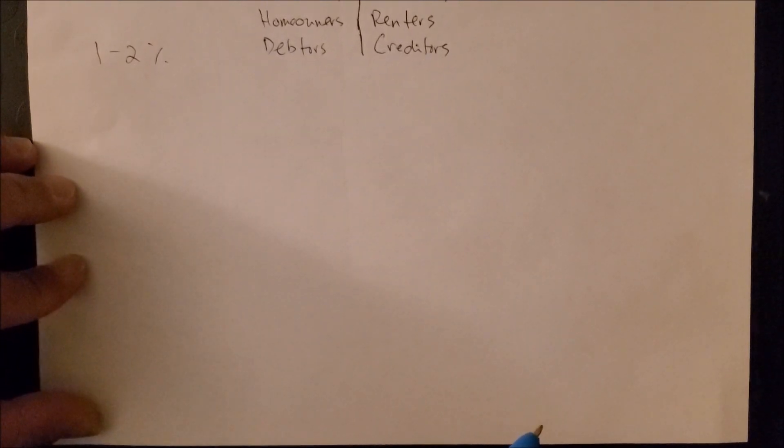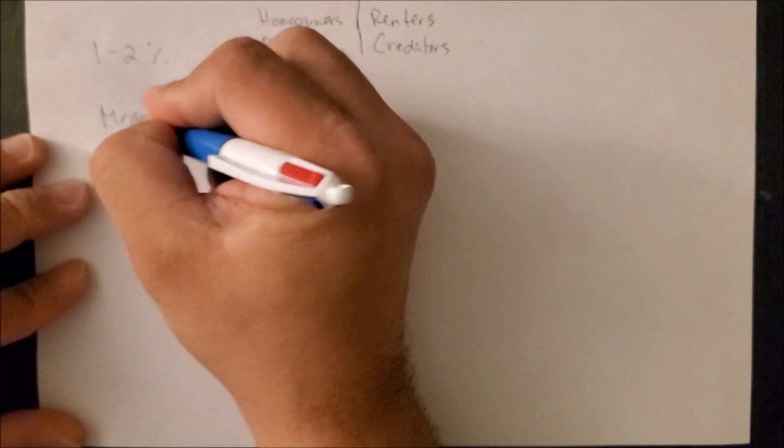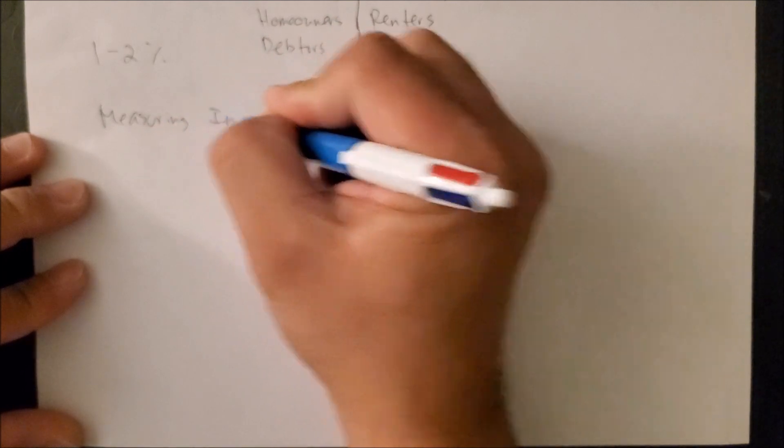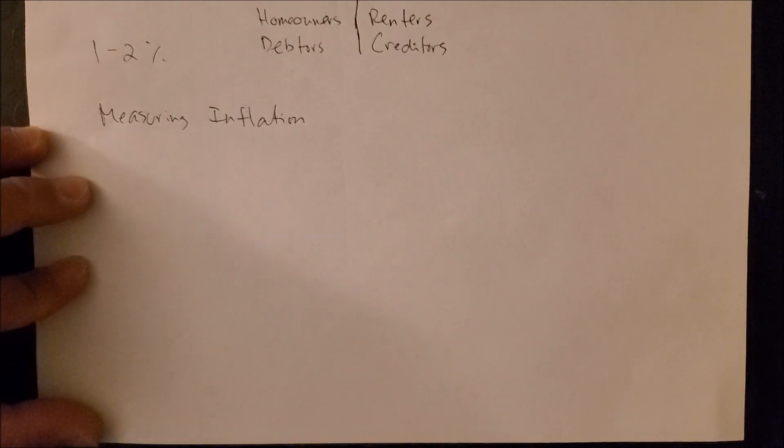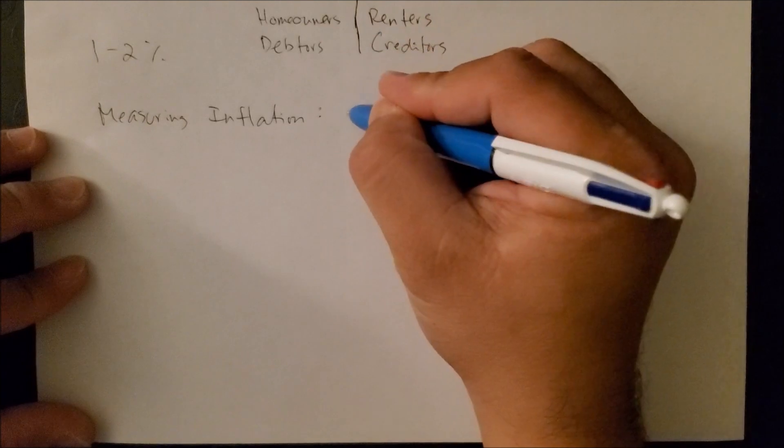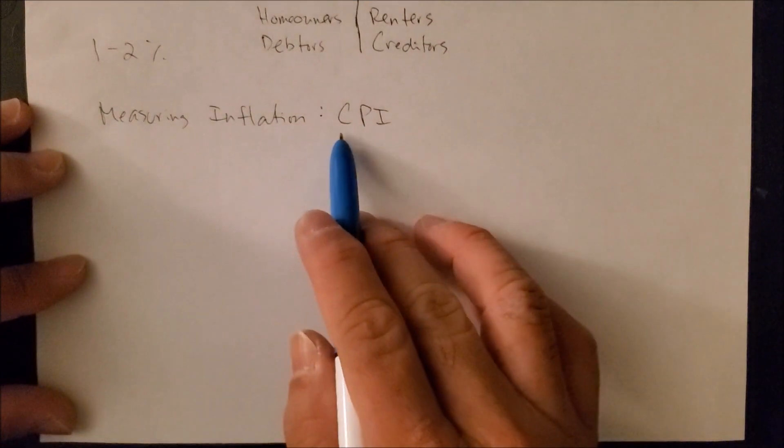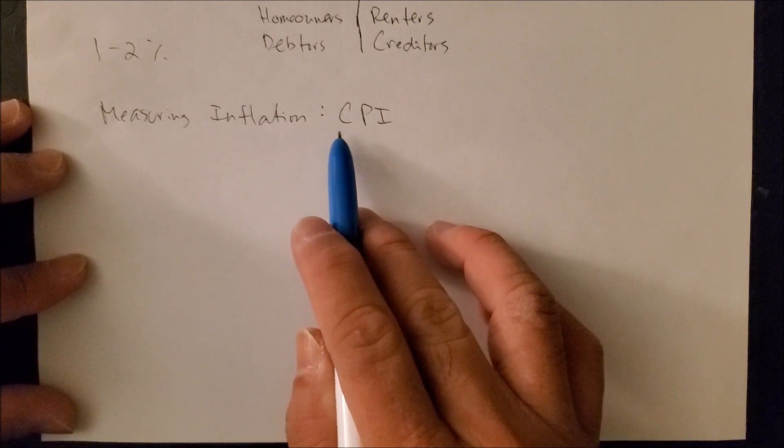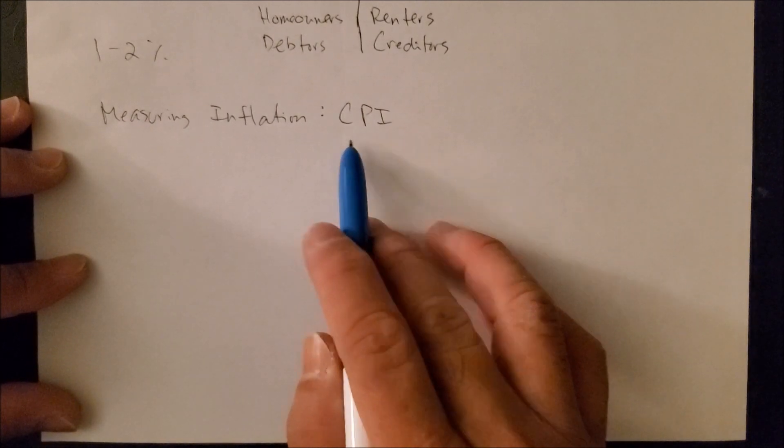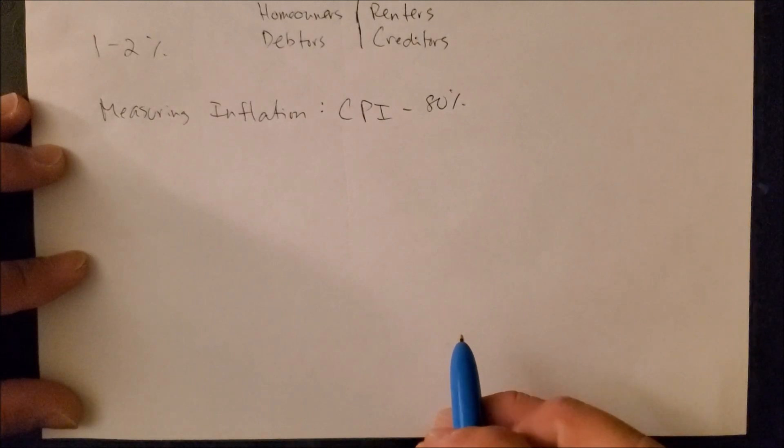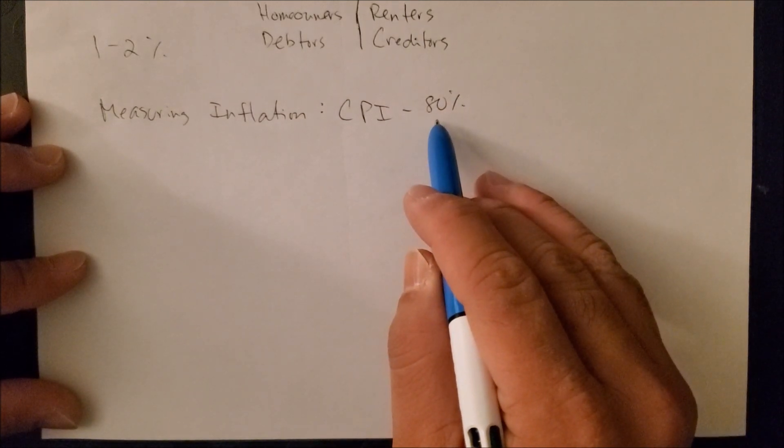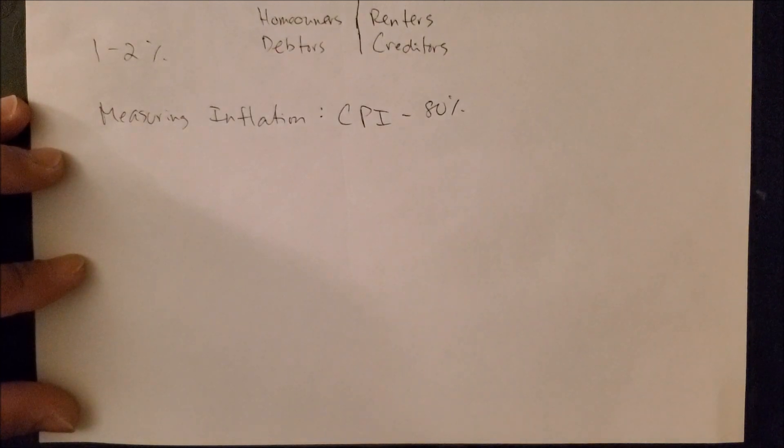This next part I want to talk about is how to measure inflation. Now there are many indices out there that we use to measure inflation, but there is one common index called the CPI, and this stands for the Consumer Price Index. The advantage of this is it takes into account about 80% of all consumers in the United States, because about 80% of consumers live in an urban area. The only drawback is it does not take into account those who live in rural areas, about 20% of the population.